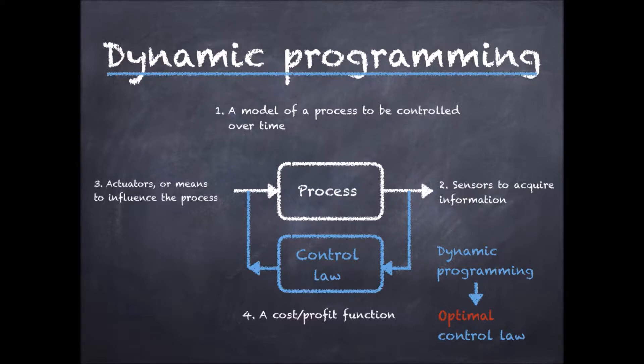However, applying dynamic programming is only feasible if the state space is small. To understand better this point, let us say that we denote by u the control input and by x the state of the system. For the example I gave earlier, the state can be the position and velocity of the autonomous car and the control inputs the pedals and steering wheel commands. Then to define an optimal control law, dynamic programming requires a model stating how the state evolves over time based on the control inputs.